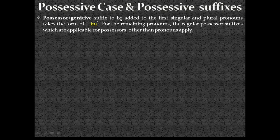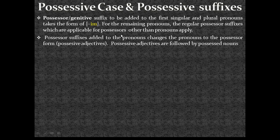So, the possessor genitive suffix to be added to the first singular and plural personal pronouns takes the form of the im-suffix. We add this possessor suffix to the first person singular and first person plural personal pronouns. For the remaining pronouns, the regular possessor suffixes, which are applicable for possessors other than pronouns, apply. Possessor suffixes added to the personal pronouns change the personal pronouns to the possessor form — possessive adjectives. Possessive adjectives are followed by possessed nouns.